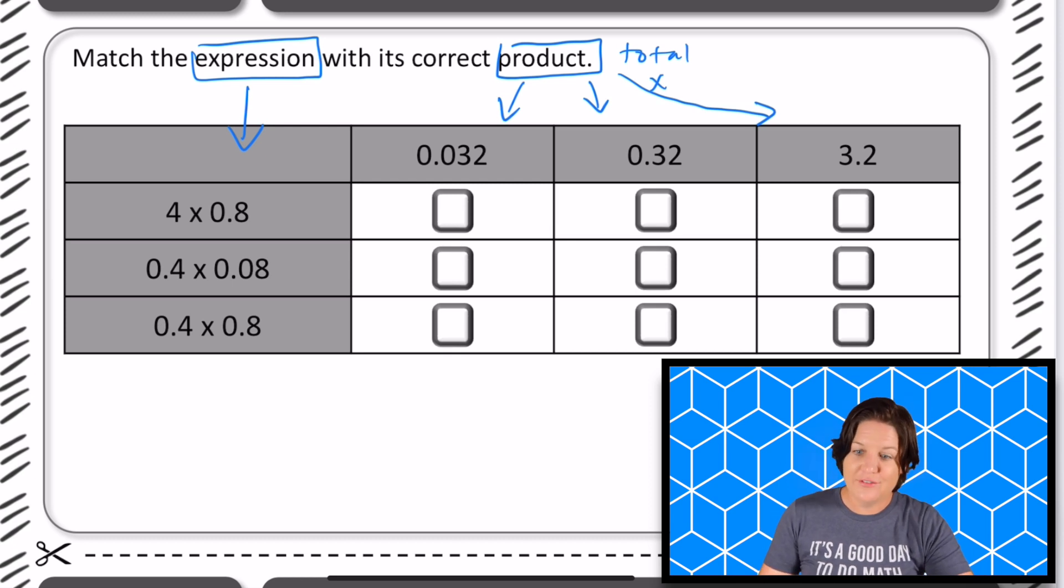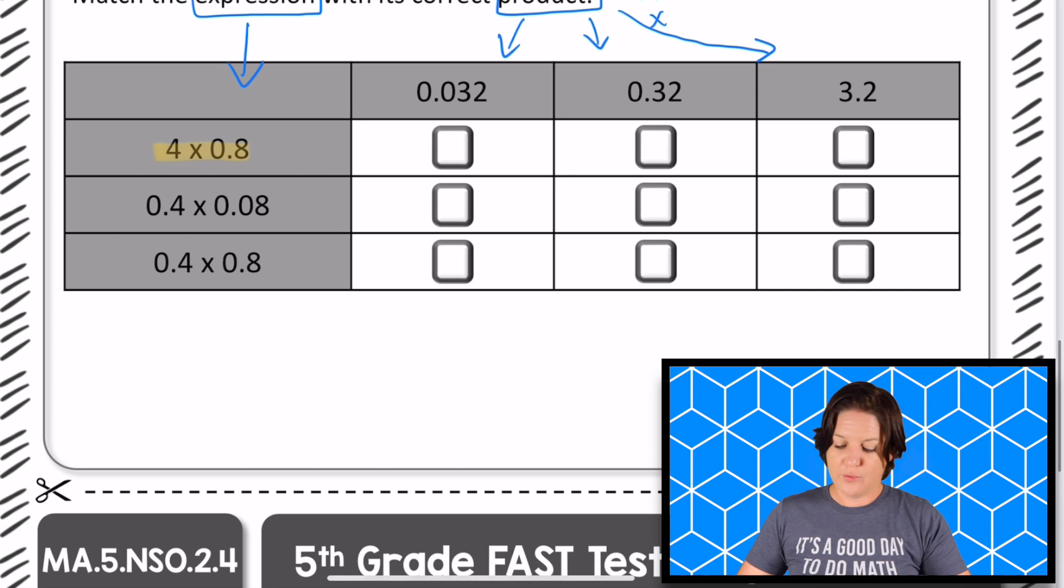All right, so this is a matching item response. I actually love these types of problems. We're going to go ahead and work on this first one right here. We have 4 × 0.8, four times eight tenths. So here I know that I'm multiplying by something that is less than one, because I'm multiplying by something that's less than one, four times a decimal number that's less than one, I know that my product is going to be less than four.